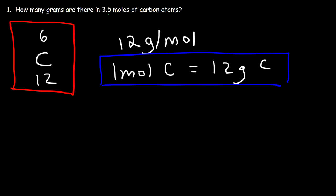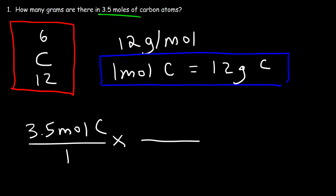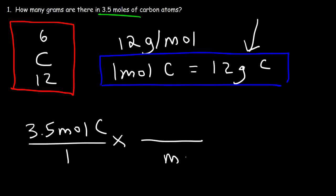Start with what you're given: that is 3.5 moles of carbon. In the second fraction, use your conversion factor to convert from moles to grams. Because we have moles of carbon on the top left, we need to put moles of carbon on the bottom right, and the number associated with that is 1. On the top, we put 12 grams of carbon. Notice how the unit moles of carbon cancels.